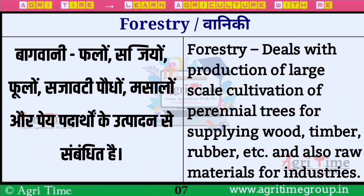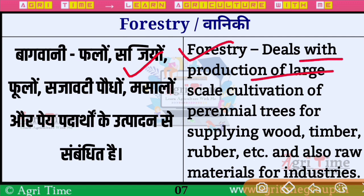अगला branch है Forestry, यानि कि वानिकी — इसमें deals with production of large-scale cultivation of perennial trees, यानि कि बड़े पैमाने पर जो वन्य वृक्ष हैं उनकी देखभाल करना, और supplying wood यानि कि लकड़ी का यहाँ से दूसरे देश में supply करना, timber, rubber — इन सभी का उत्पादन करना। ये सभी Forestry यानि कि वानिकी के अंतर्गत आता है।